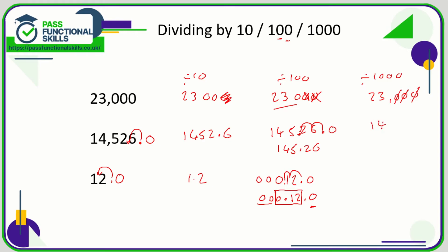With the number 14,526, we can write that as 14,526.0. When we're dividing by 1,000, because there are three zeros in 1,000, we're going to move that decimal point three positions, and we're going to move it to the left because we want to make the number smaller.